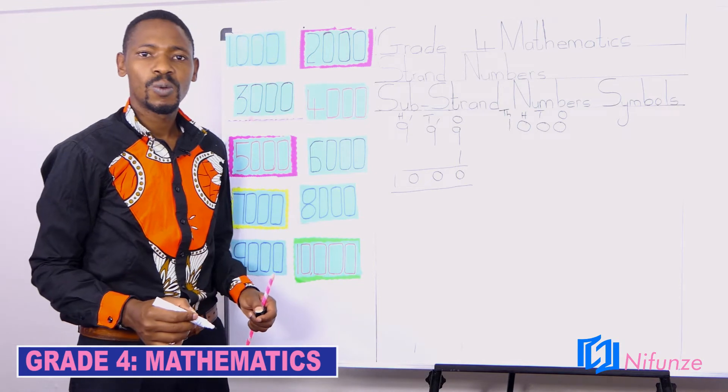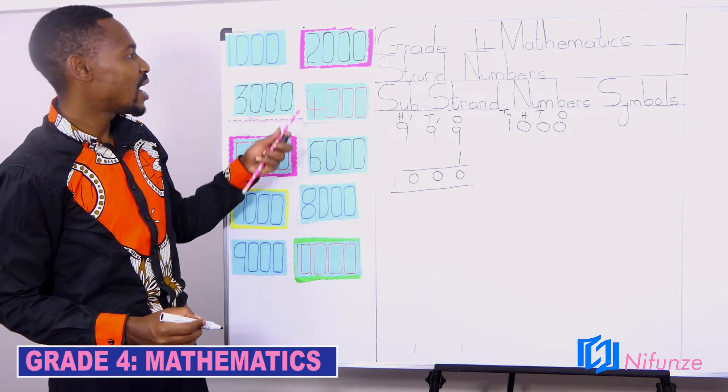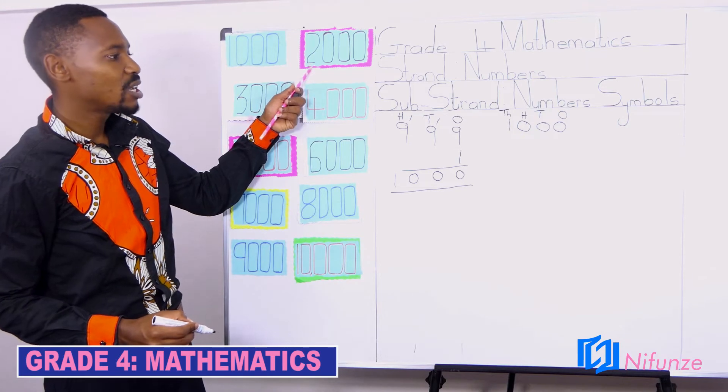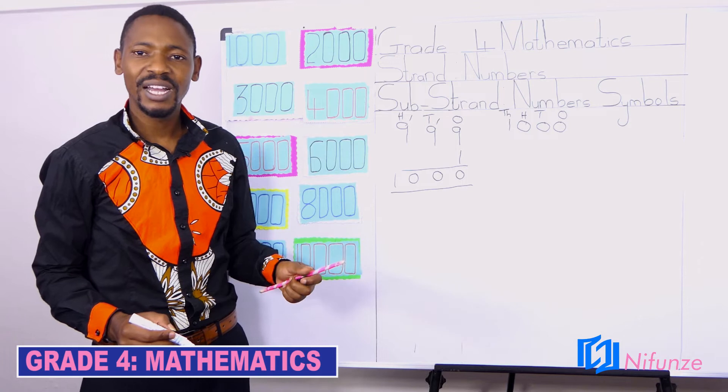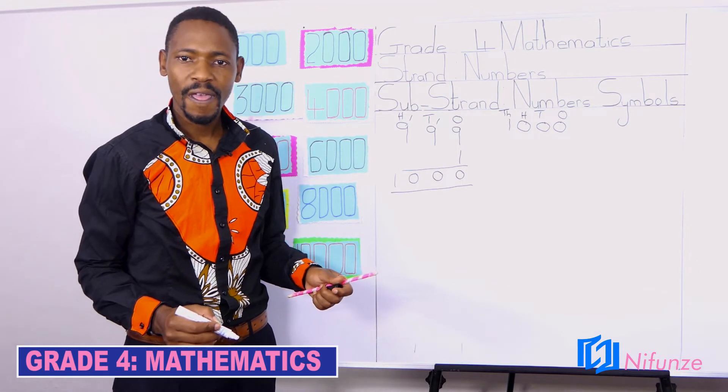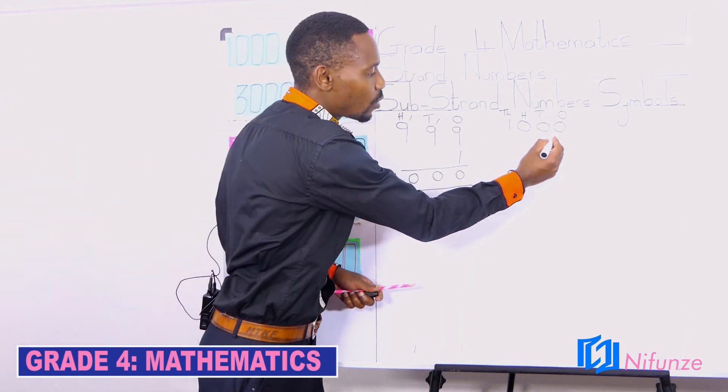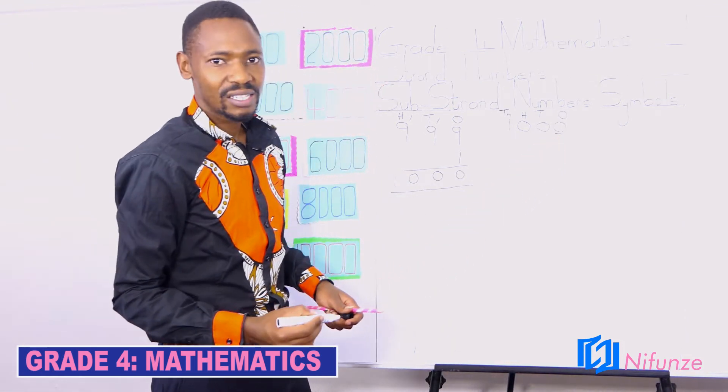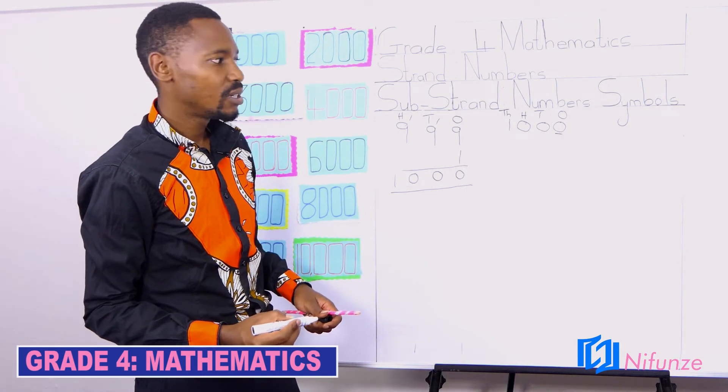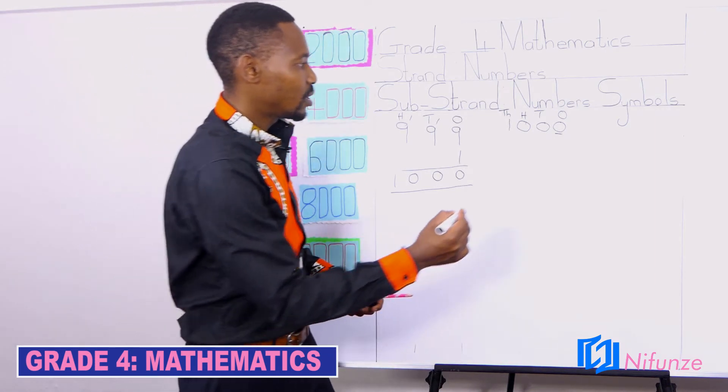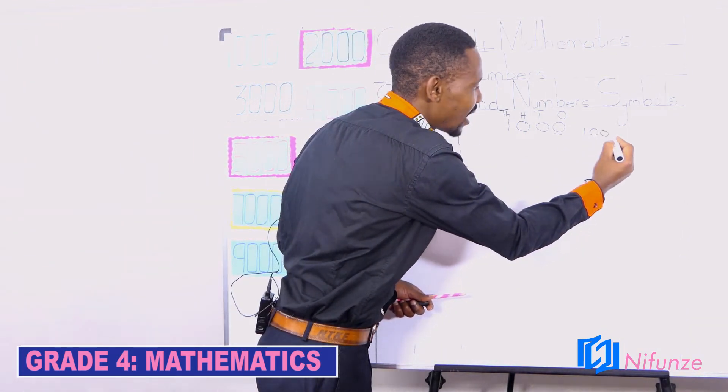Now, for you to continue counting until we arrive to 2,000, we shall just write 1,000 and 1. That means this 0, which is in the place value of 1s, now it is going to become 1. How? 1,000 and 1.